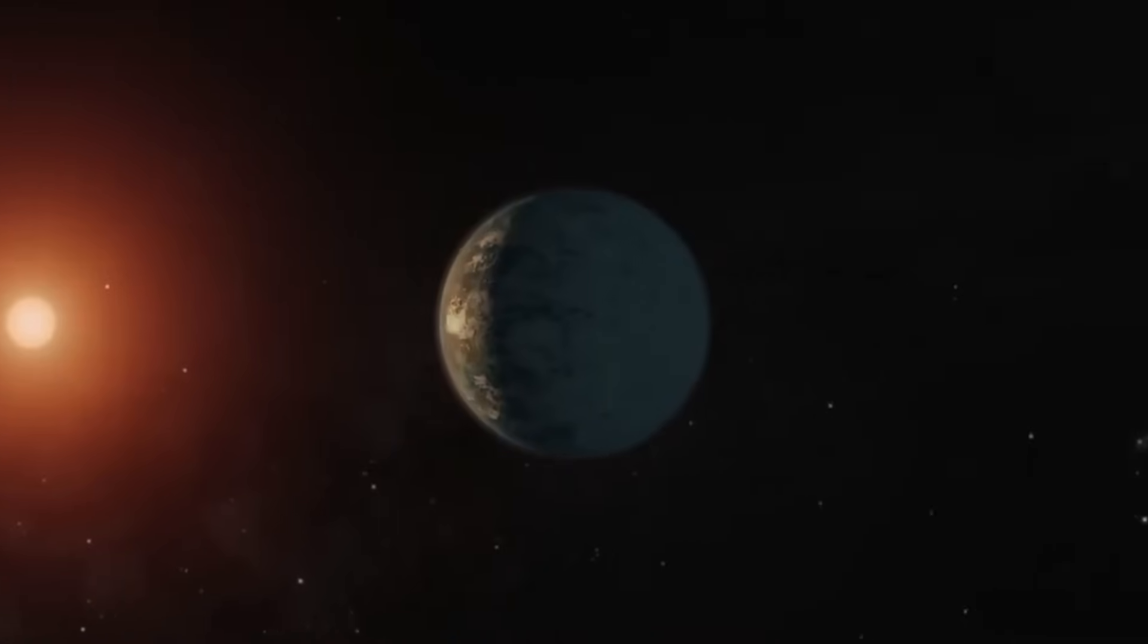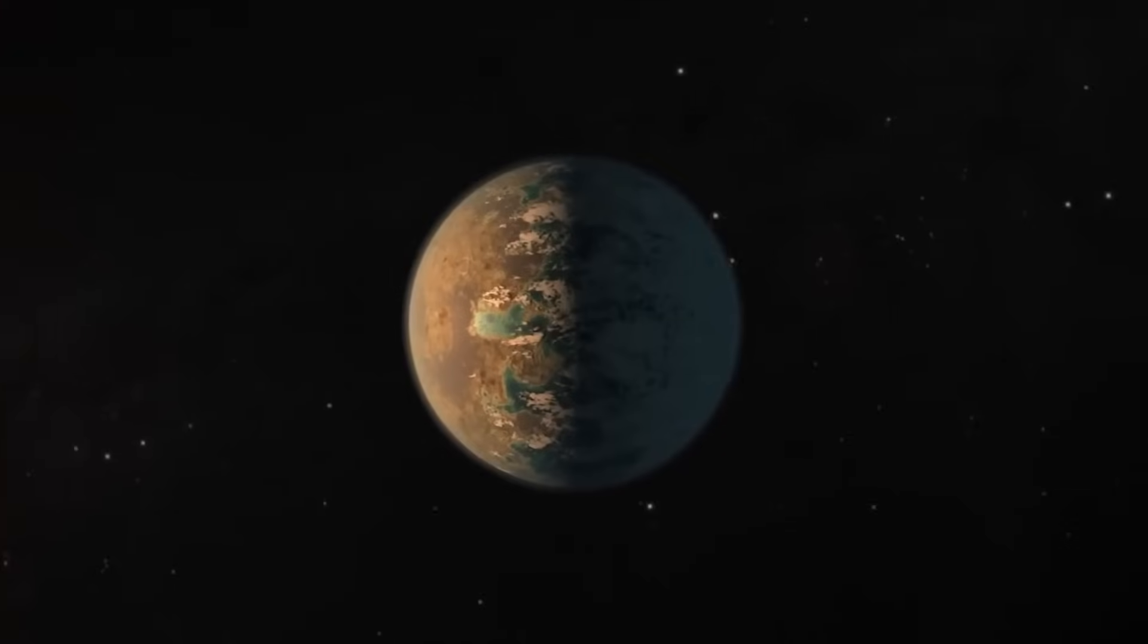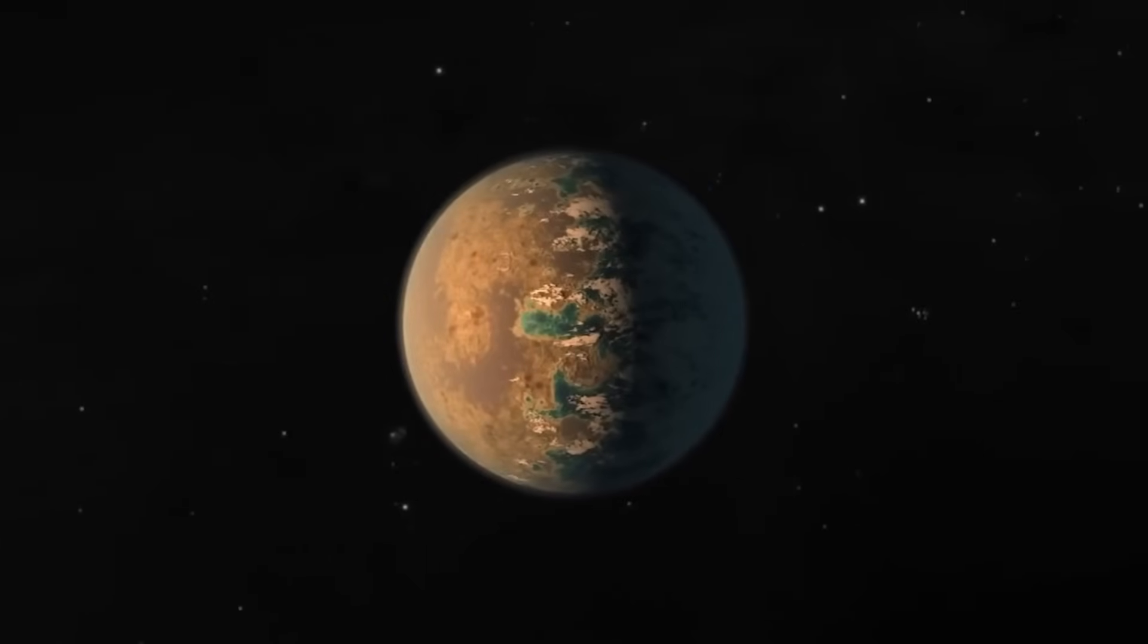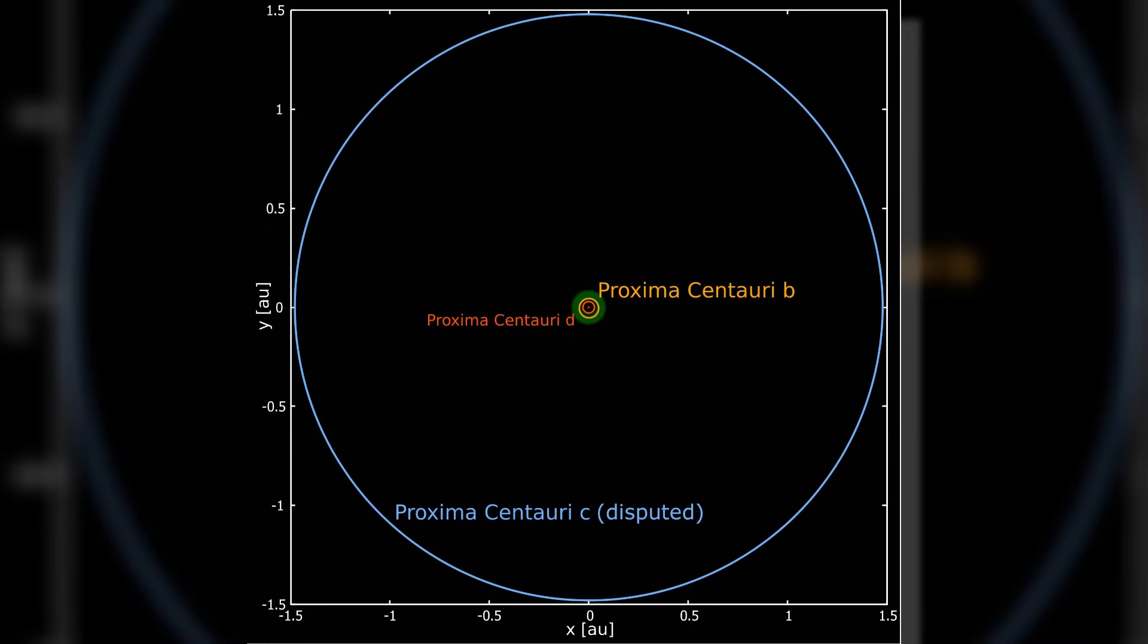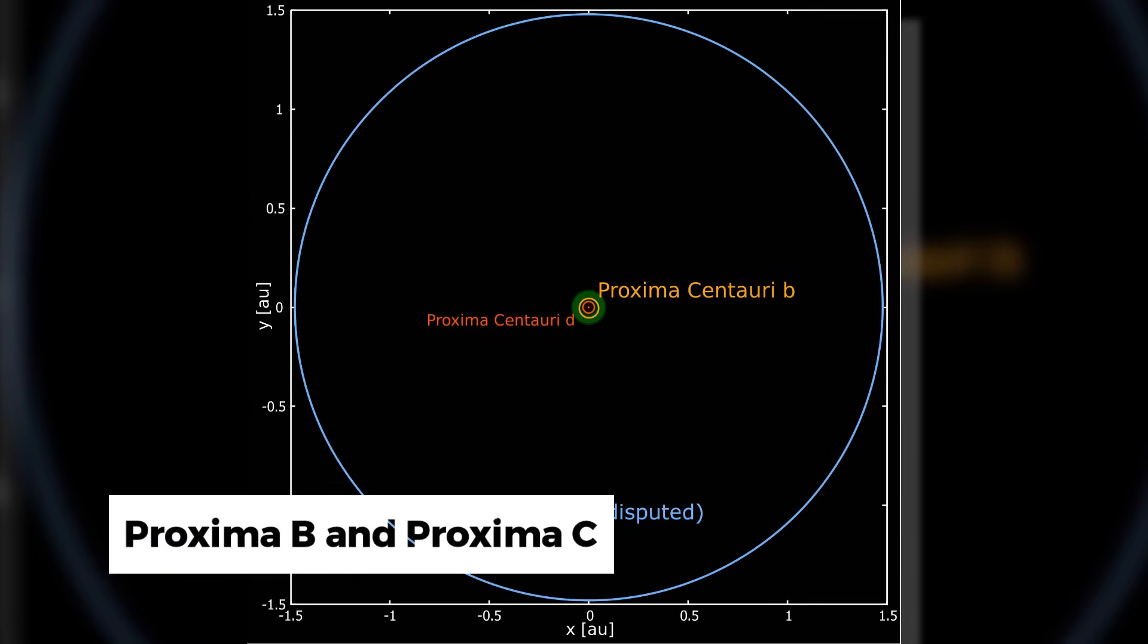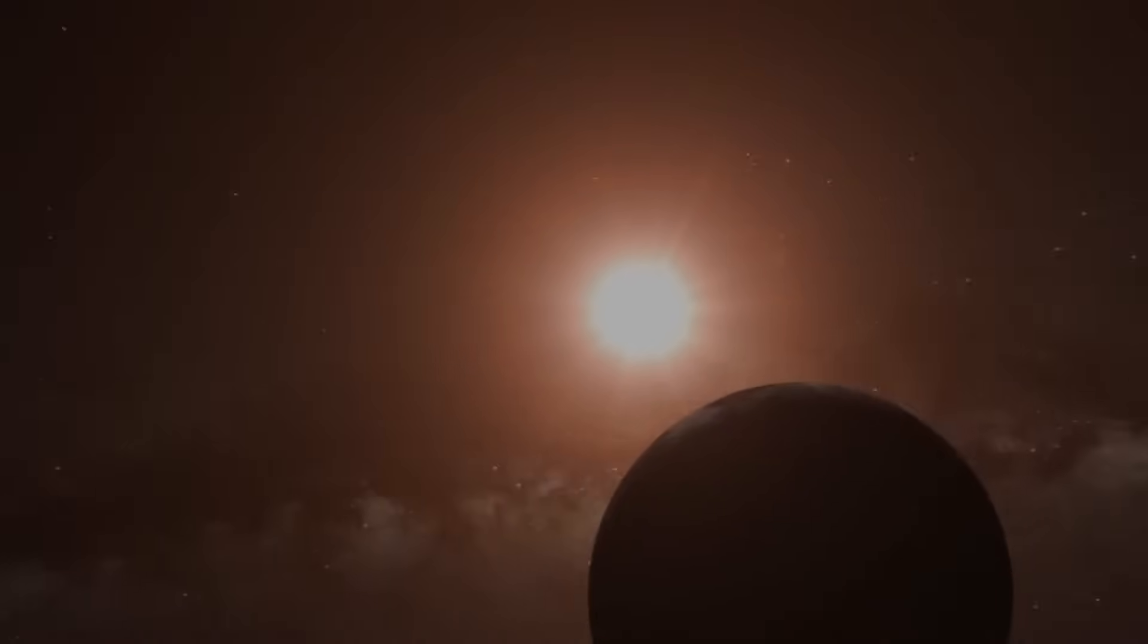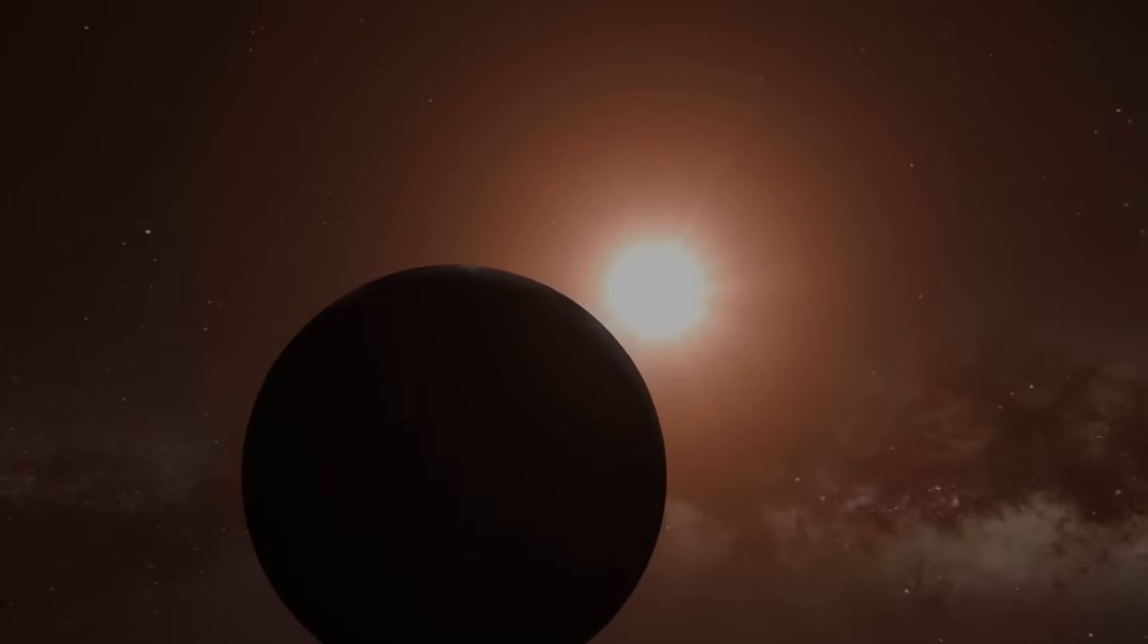This orbit results in tidal locking, with one side of Proxima B in perpetual daylight and another in eternal darkness. Scientists have been studying Proxima Centauri, the closest star to our Sun and its two known planets, Proxima B and Proxima C. The light emission was detected when the exosolar system around Proxima B was not obstructed by the host star around the time of the new moon.